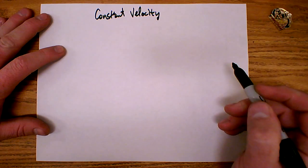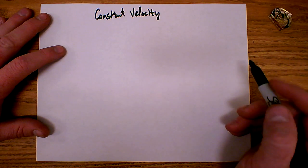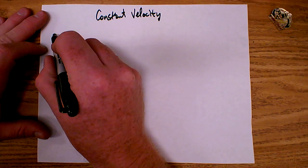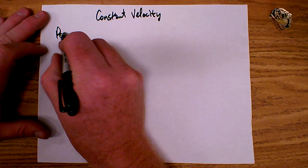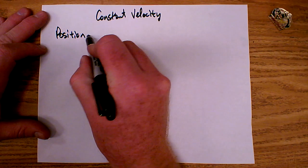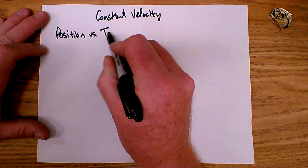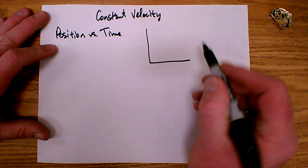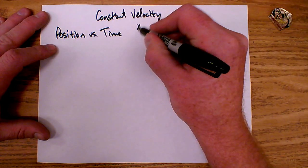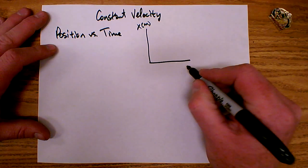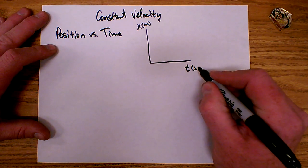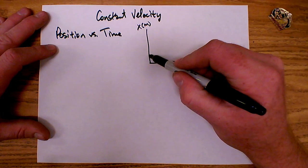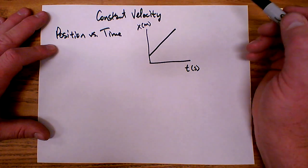If we were to measure the position and time for an object that has constant velocity, we can create a position versus time graph. A position versus time graph for constant velocity will look something like this. We'll use x to represent position, measured in meters, and t for time, measured in seconds. And if we were to graph it, it would be nice and linear.